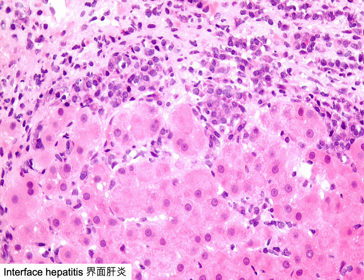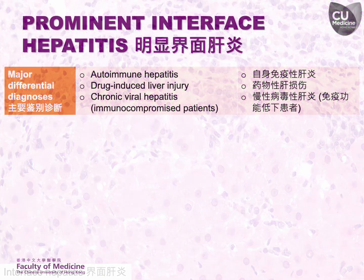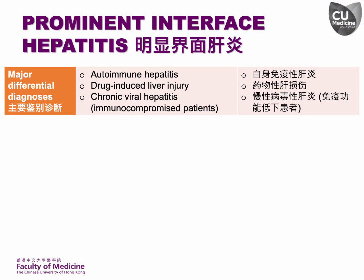This is an example showing prominent interface hepatitis. Although prominent interface hepatitis is typically regarded as a hallmark feature of autoimmune hepatitis, it can be observed in any acute or chronic hepatitis with high disease activity, including drug-induced liver injury and chronic viral hepatitis with high activity, especially among immunocompromised patients.